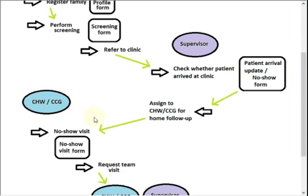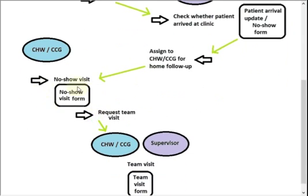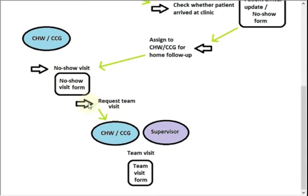In Comcare, the CHW or CCG will receive a notification and will see on their list of no-show visits that there's someone they need to go and visit who hasn't arrived at the clinic. They will go and find them and fill out a no-show visit form about the reasons why they didn't arrive. If the person is bedridden or there's some other reason they can't get to the clinic, they have the option of requesting a team visit, which will show up on the list in the supervisor's app — or the CCG's app as well — indicating that people require a team visit.